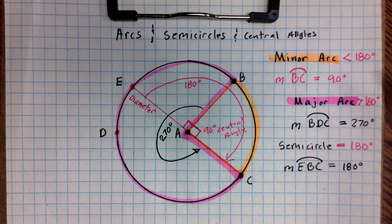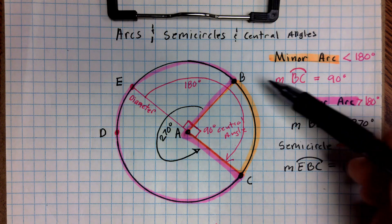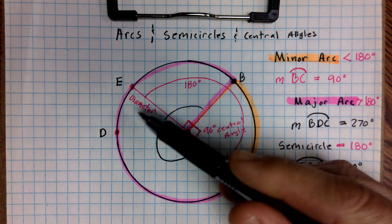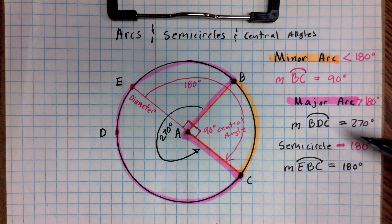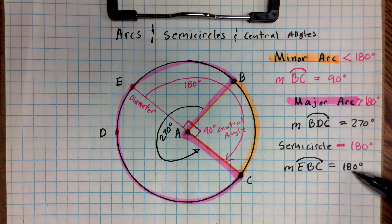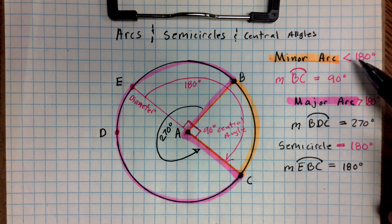So just remember to go ahead, and when you're naming these, name your minor arc with two letters. Name your major arc with three points on the circumference. So it would be three letters, and a semicircle, you're going to name it as an arc as well using three letters. But it will always be one that is equal to 180 degrees. And that is the difference between the three.